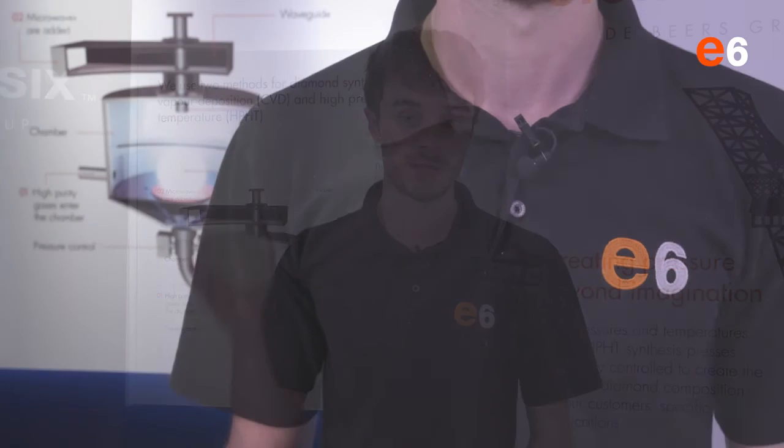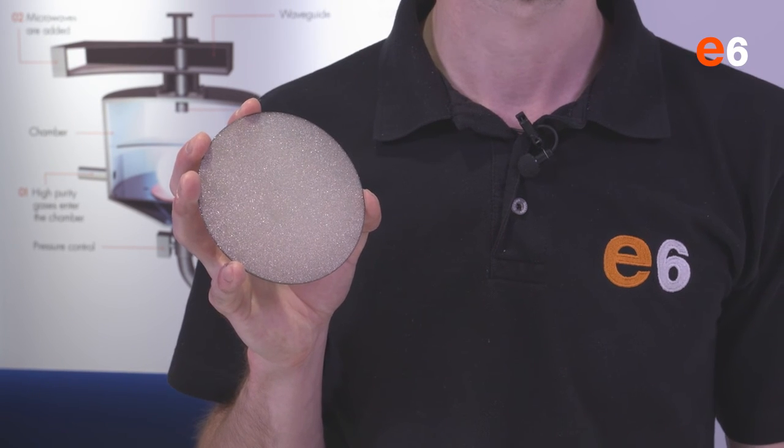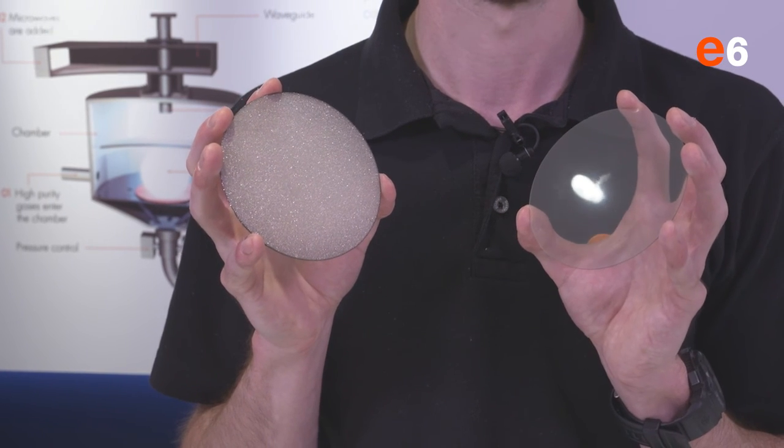We can also play around with the structure of the material by taking lots of small diamond crystals and form polycrystalline diamond. It has this textured surface due to the small grains, although when we polish it, it looks flat and clear.